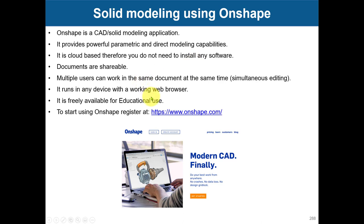It is freely available for educational or personal use. The main difference between these two versions is that in the personal free version, your documents are public. In the educational or fully commercial version, your documents are private. But you have the same professional features in all versions, the same as you'd find in other CAD tools like SolidWorks or ProE.